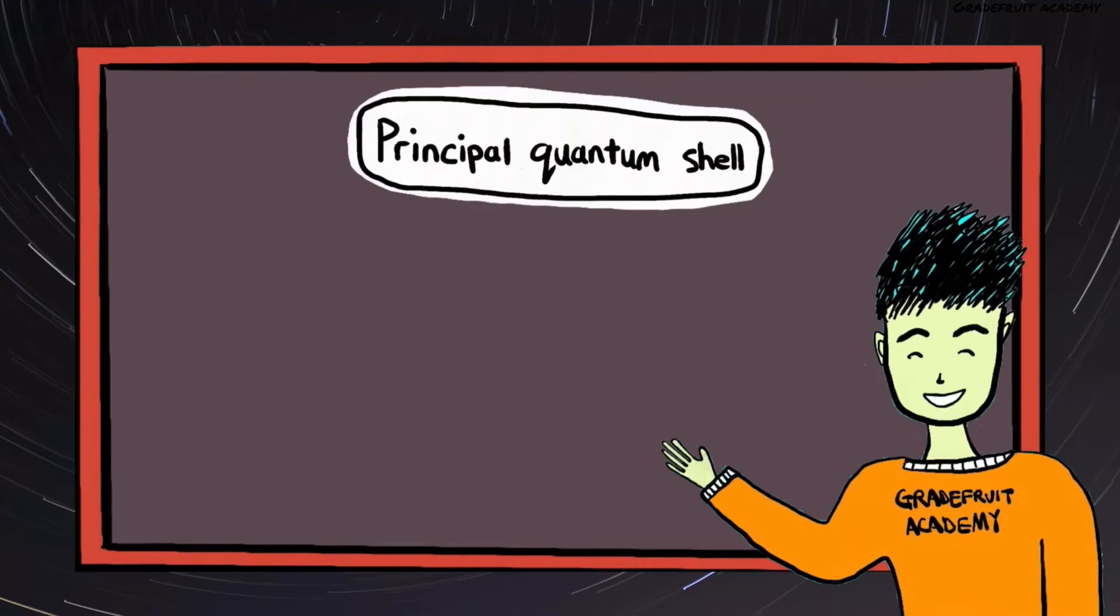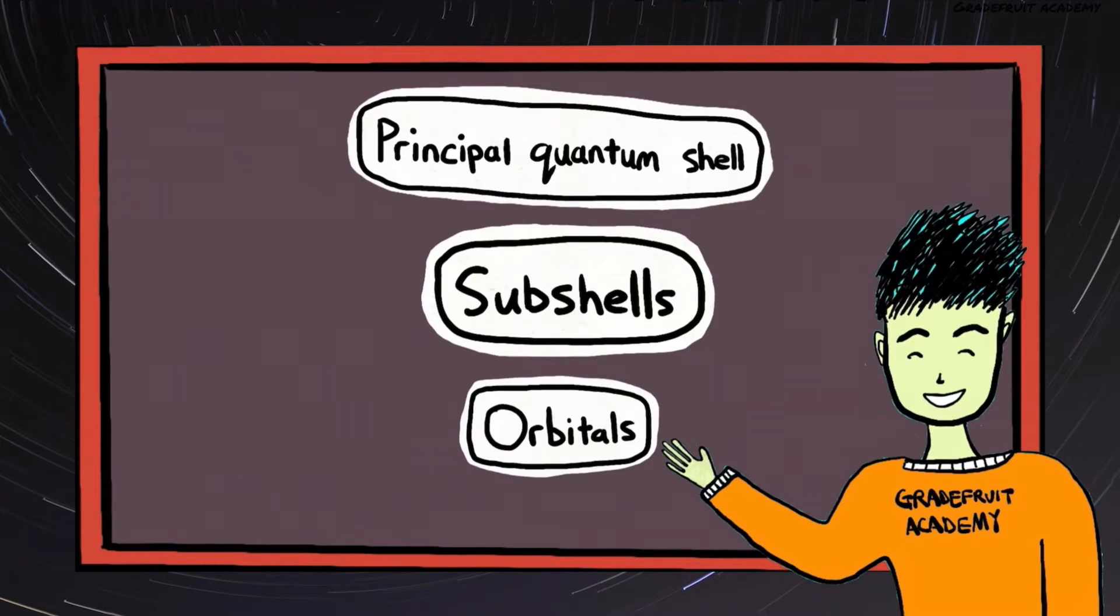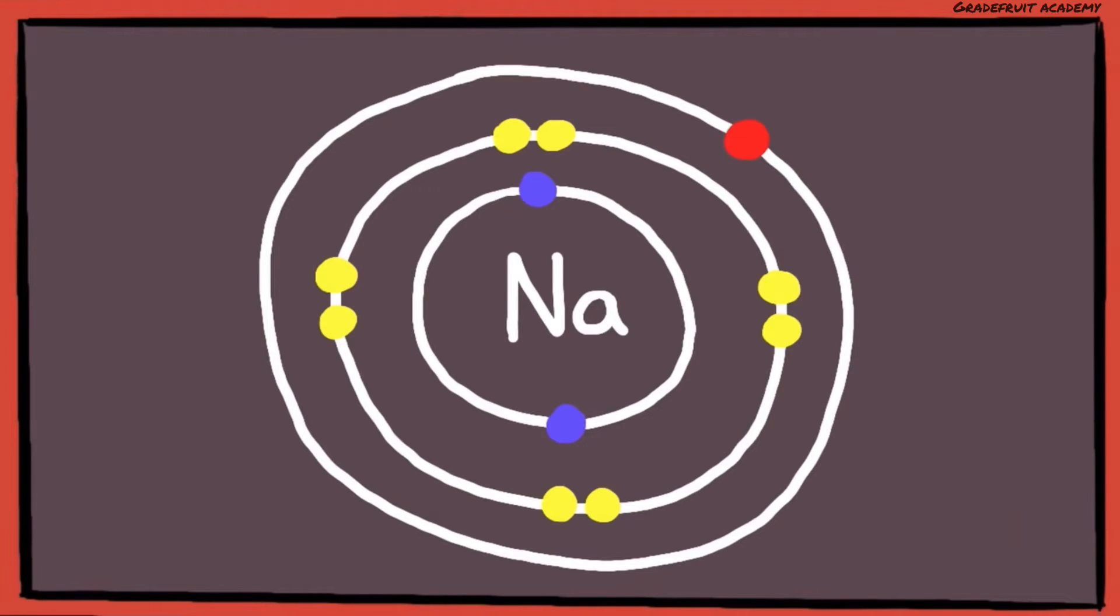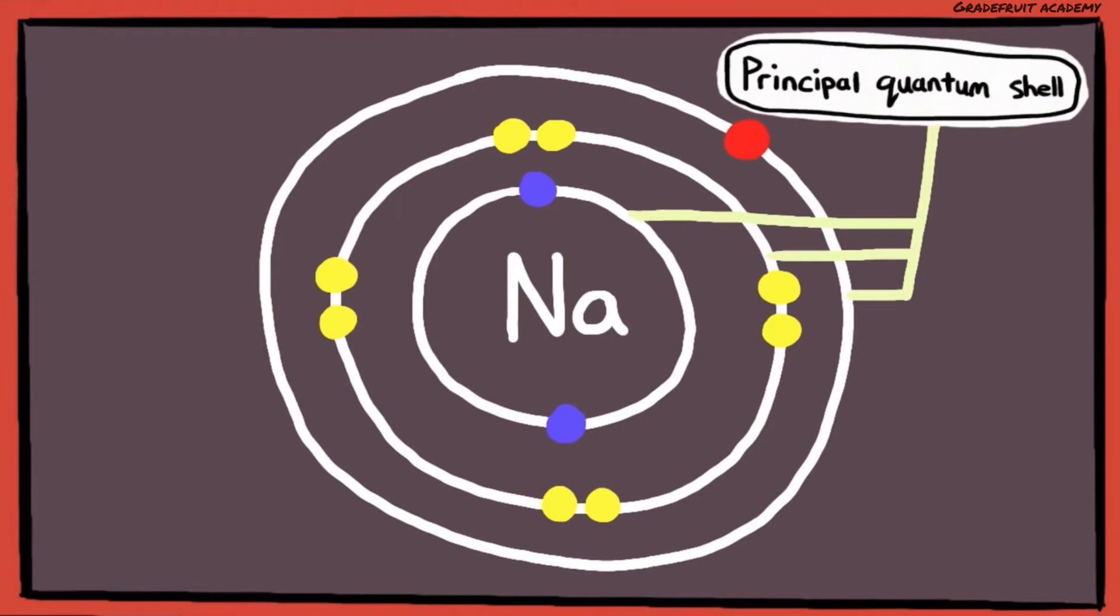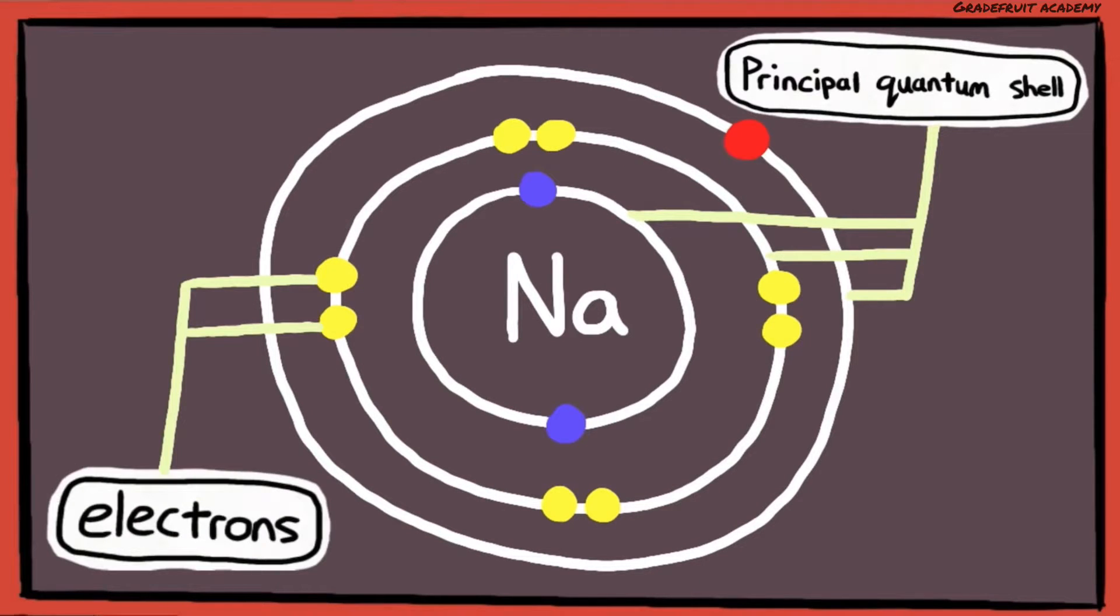In short, principal quantum shells contain subshells, which contain orbitals, which contain electrons. This is how a typical sodium atom looks like. Unfortunately, this diagram can only show you the principal quantum shells and electrons, but cannot show you the subshells and orbitals.